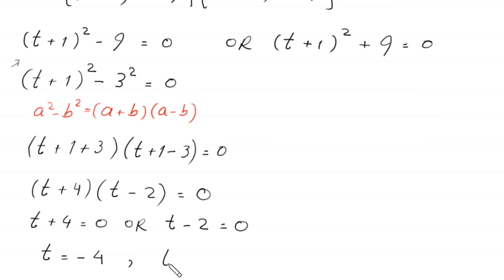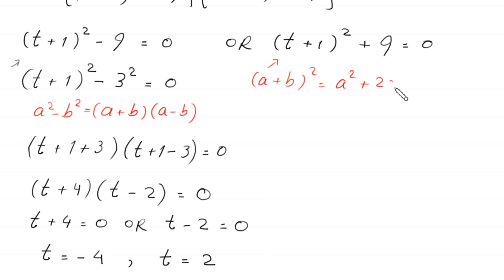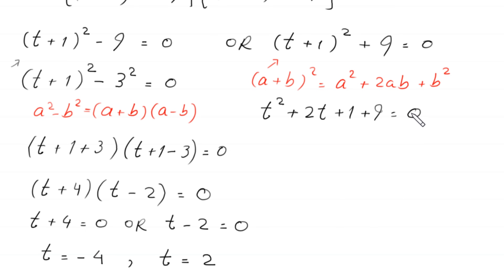From t + 4 = 0 we get t = -4, and from t - 2 = 0 we get t = 2. Now for the second factor, (t + 1)² + 9 = 0. We expand (t + 1)² using a² + 2ab + b², giving t² + 2t + 1 + 9 = 0, so t² + 2t + 10 = 0.